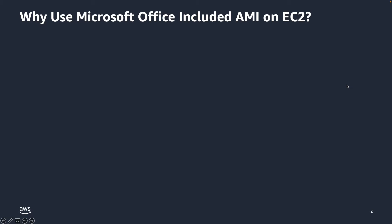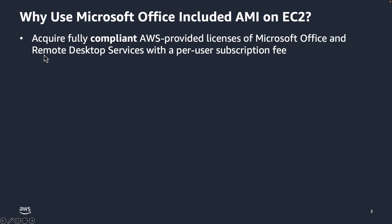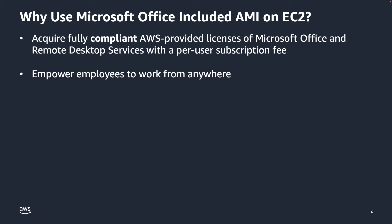So why should you use Microsoft Office-included AMI images on EC2? First, it means you can acquire a fully compliant AWS-provided license of Microsoft Office and the Remote Desktop Services CAL, or Subscriber Access License, with a per-user per-month subscription fee. It empowers employees to work from anywhere, and you can deploy these images across a broad choice of AWS instance types.